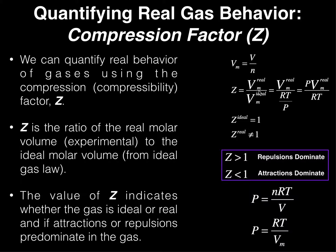Remember that molar volume is simply the quotient — you take the actual volume of the gas, the volume of the container, and divide by the number of moles, and this gives you the molar volume. So we can calculate the compression factor by dividing the real molar volume by the ideal molar volume. The real molar volume is simply the volume of the container divided by the number of moles of gas.